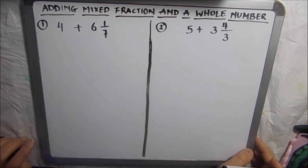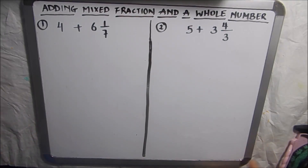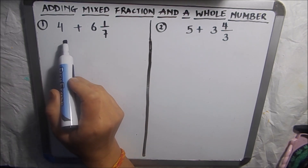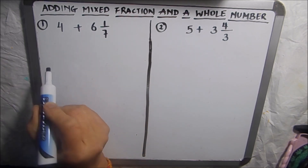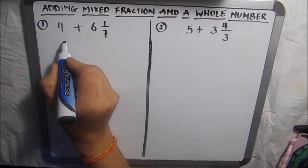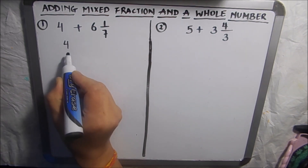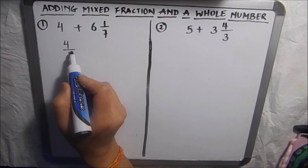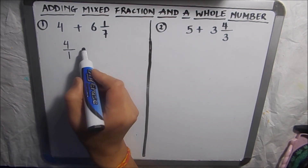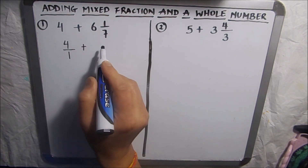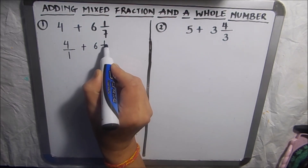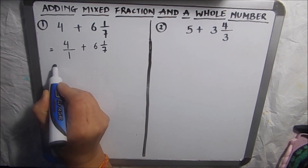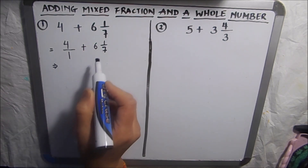Hello viewers, today we are going to learn how to add a mixed fraction with a whole number. So without wasting any time, let's get started. First of all, we'll write the whole number with a denominator of one, because every whole number has a denominator of one. Then we will write the sum as is. This is our first step.